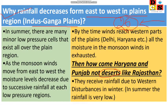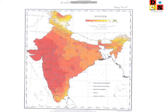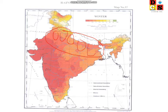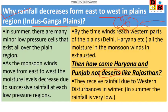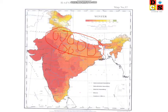Let's start. In the summer season, there are many minor low-pressure cells that exist all over the plain region. You can see the plain region — this is the Indo-Gangetic plain of India. There are many minor low-pressure cells in the summer season. As the monsoon winds move from east to west...